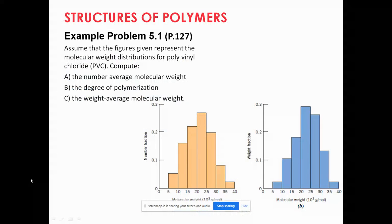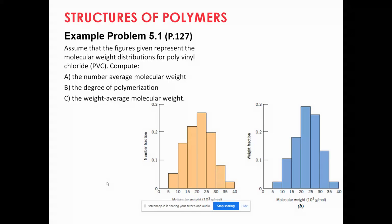Let's have a look at a problem — an example that asks us to determine average molecular weight using the number average method and the weight average method. These are two statistical approaches for a specific type of polymer, PVC. This problem is taken from your textbook, problem 5.1, page 127.